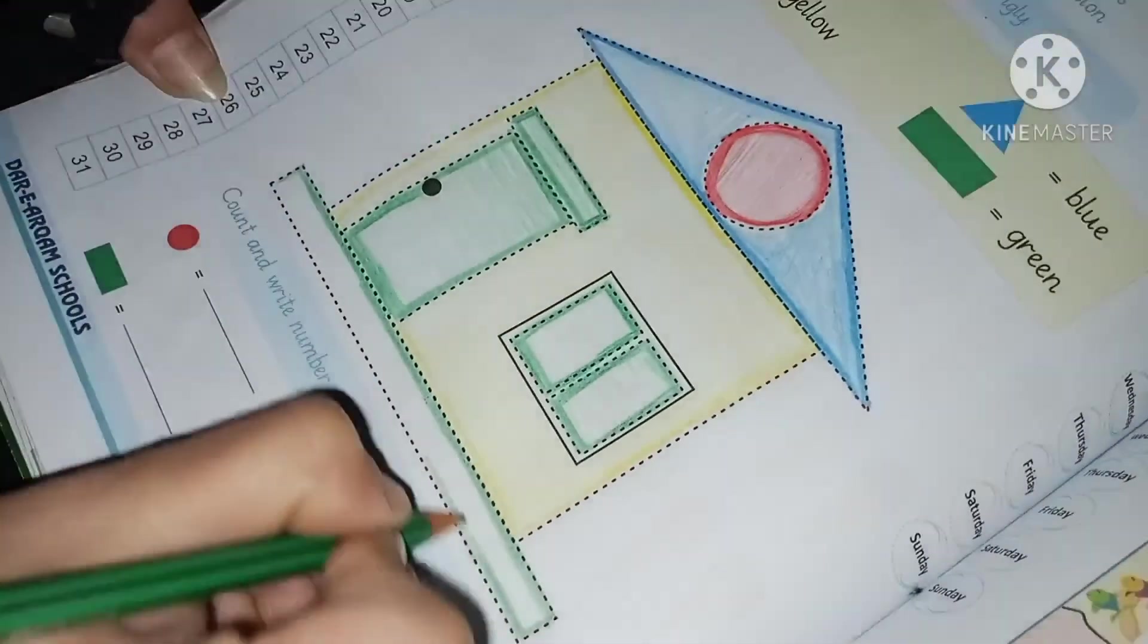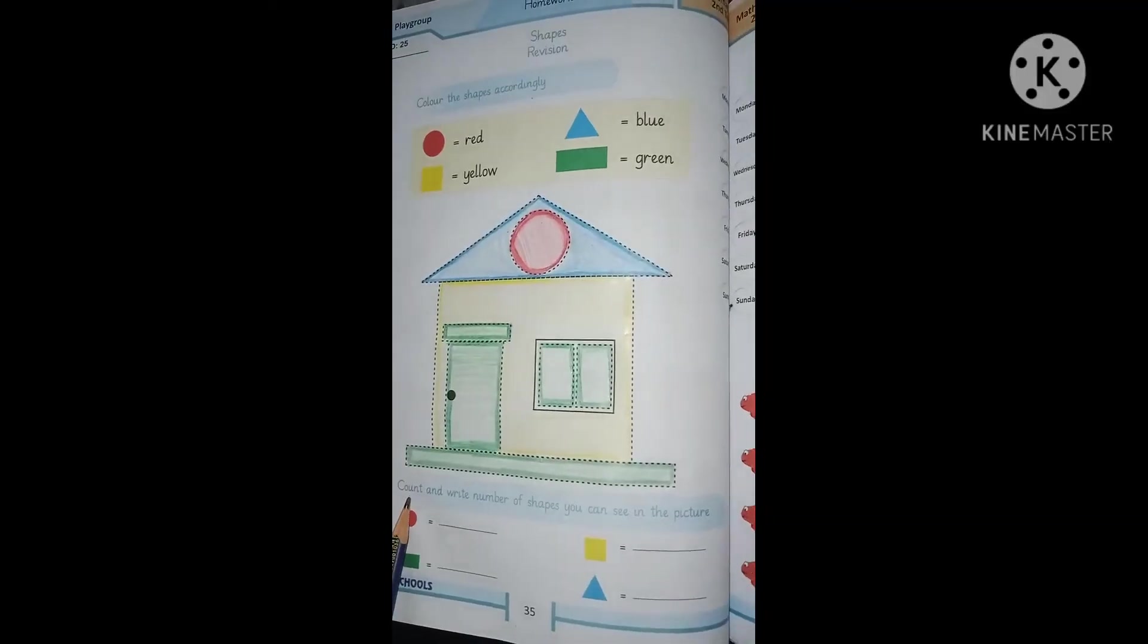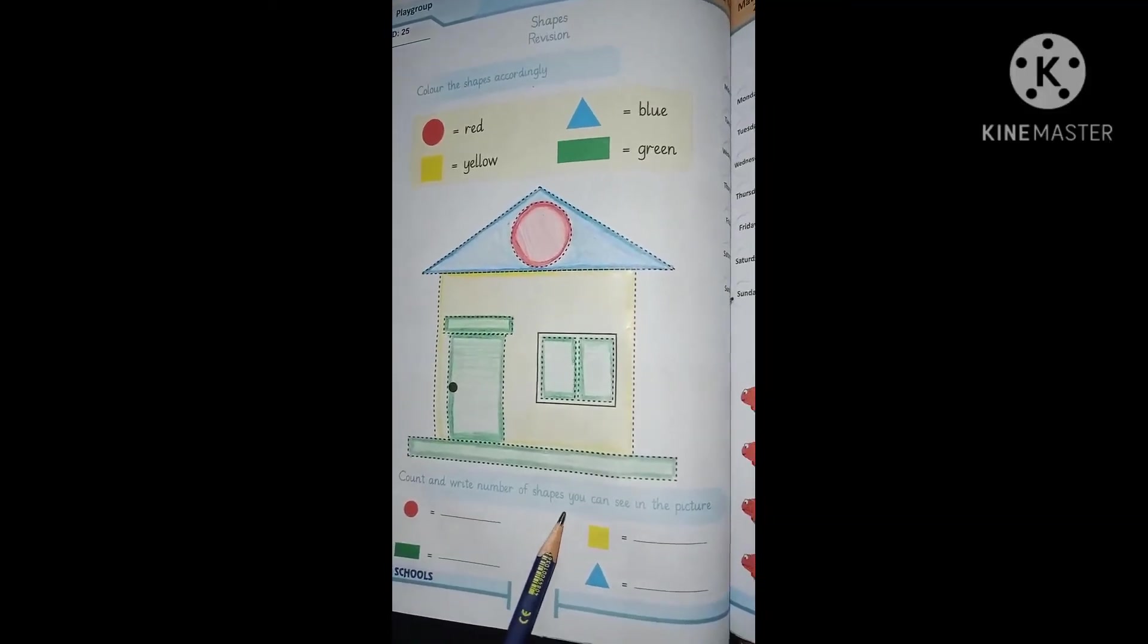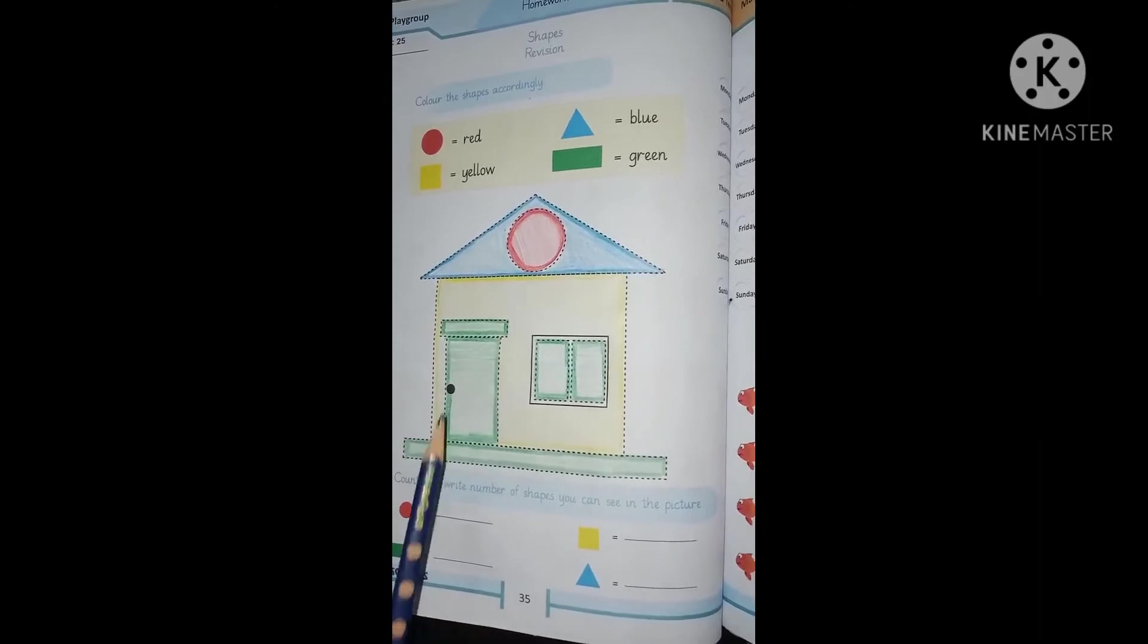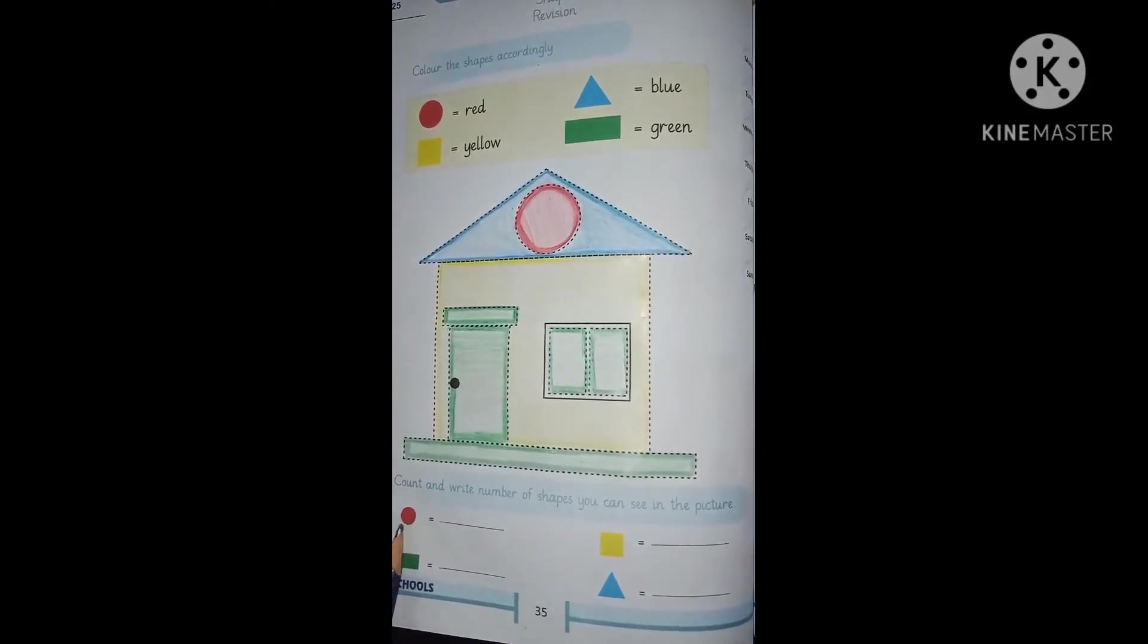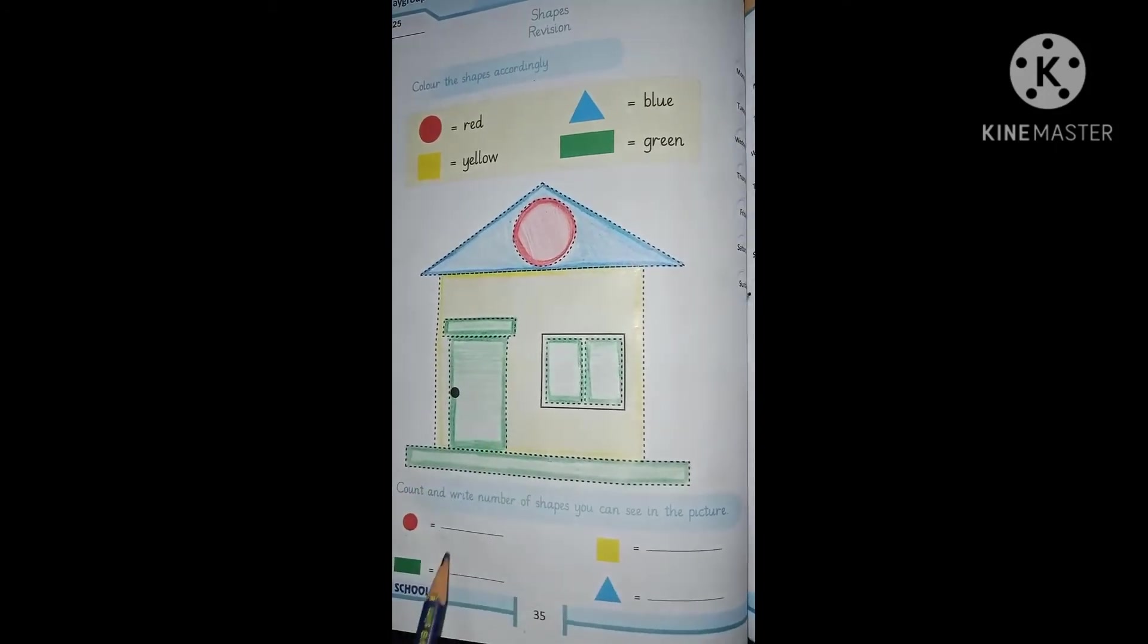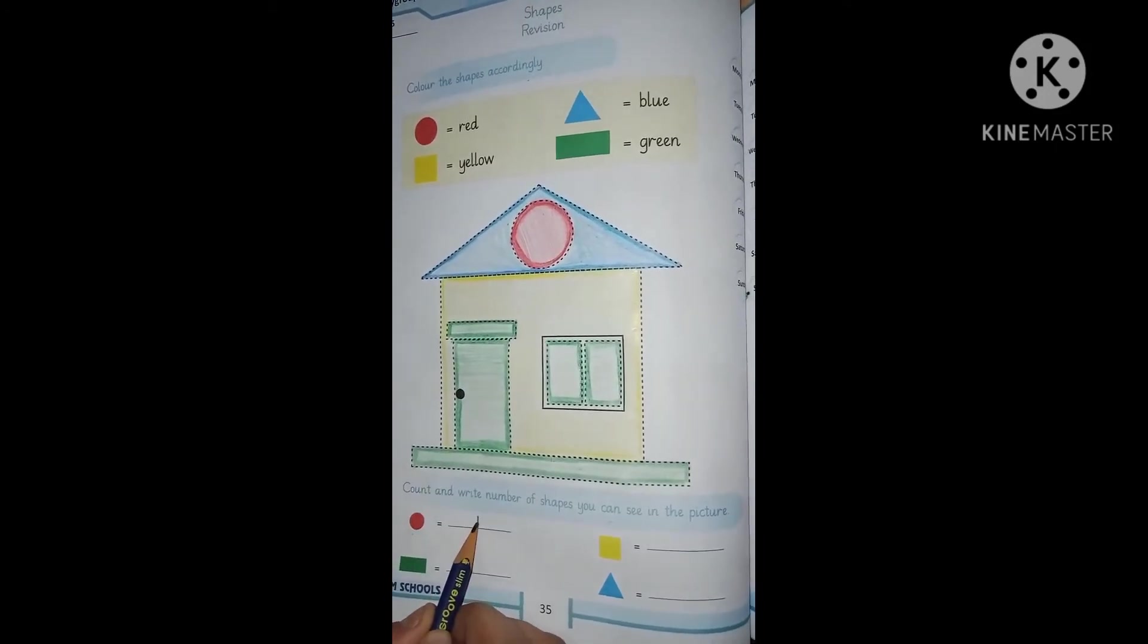Do your color in white form. Well done, my students. Very well done. Dear students, now count and write number of shapes. Number of shapes you can see in the pictures. Look at here. Which shape is this? Circle. How many circles are there? One. Only one circle. So you have to write here one.